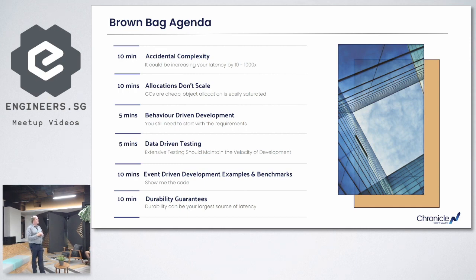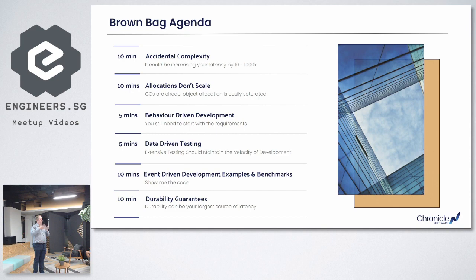We've seen cases, even quite recently, where it's two or even three orders of magnitude of time spent not actually fulfilling the business need, but because of the tools, strategy, or approach taken. I look at a specific example covered in one of my articles. The one that got the most interest is about showing that allocations don't scale — as you have more and more threads creating objects, you reach a saturation point where the system cannot allocate more objects, and this is shared globally.